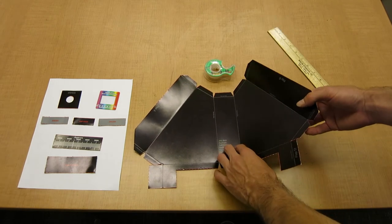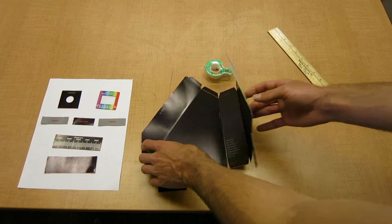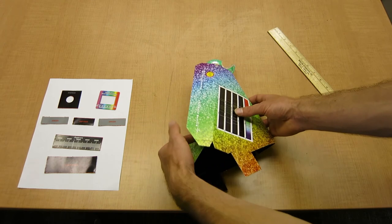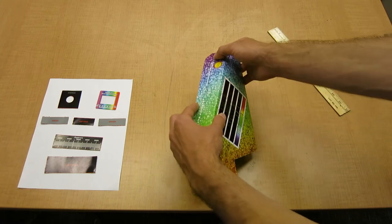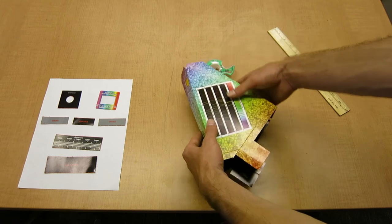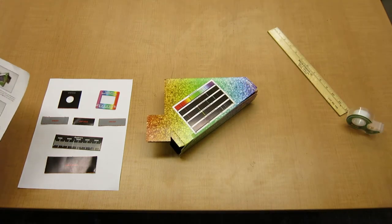Now fold the body like this, making sure to put flap B over flap A. Line up the edges and then tape them.